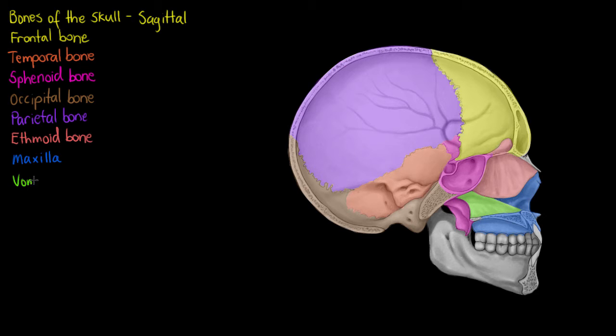In the green here I've just highlighted our vomer. The vomer being a bone that's almost exclusively viewable from this interior or sagittal view here. Next in the dark purple here we have our mandible or jaw bone.